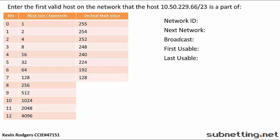Since the mask is larger than a slash 16 and less than a slash 24, we know we are working in the third octet. Since there are only 8 bits in an octet, or 0 through 7, this means the 8th bit on the cheat sheet represents the previous octet, which is all binary ones, or a slash 16. From there we have to count up until we reach the given mask, which is a slash 23: 17, 18, 19, 20, 21, 22, 23. Now we can go parallel to our mask to find our block size. In this case, it is 2.